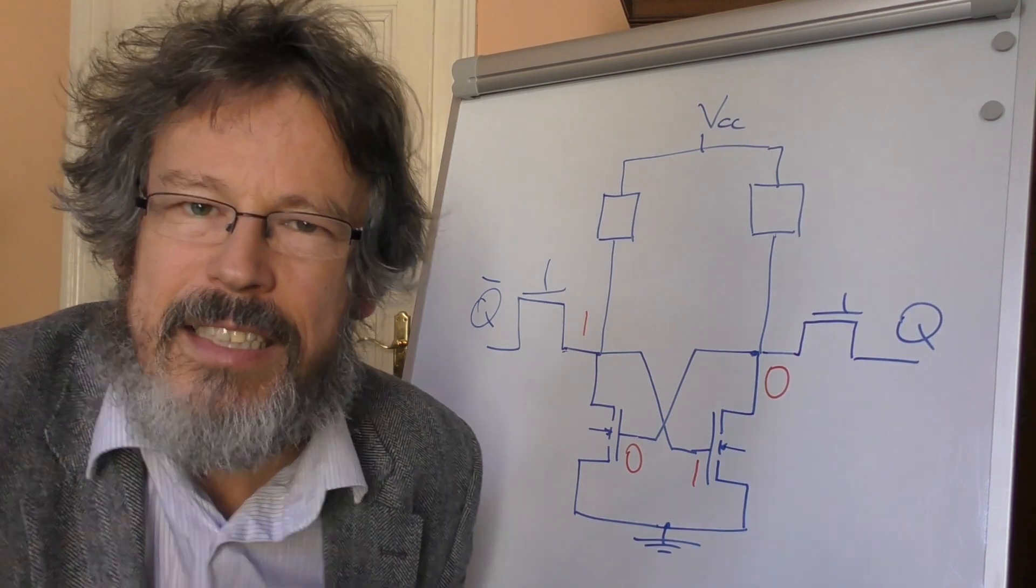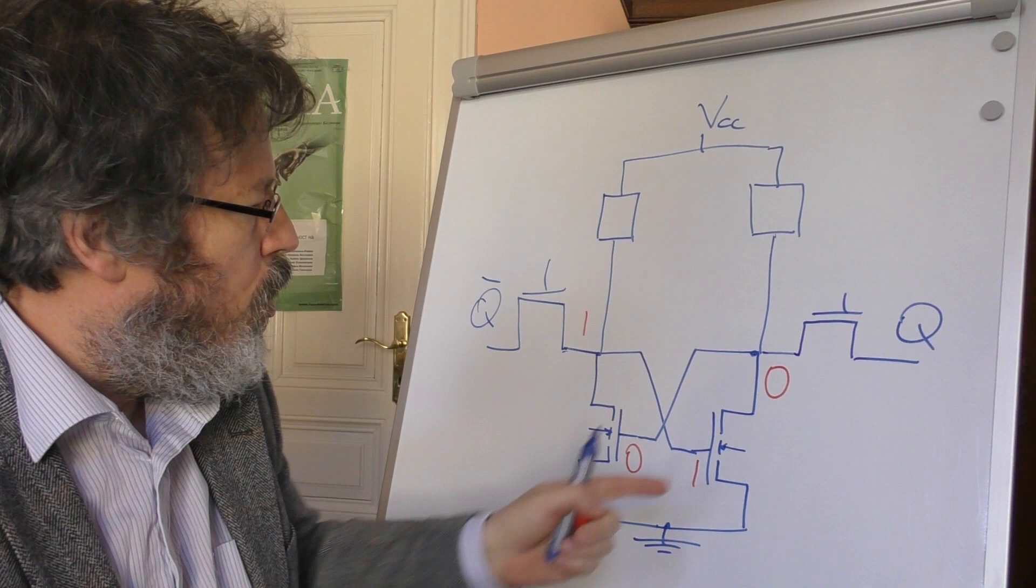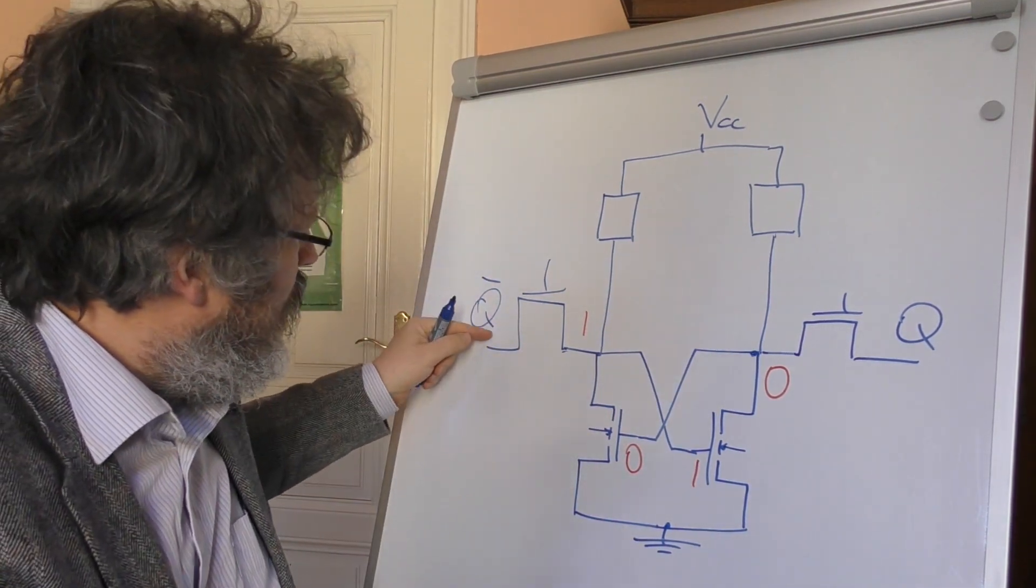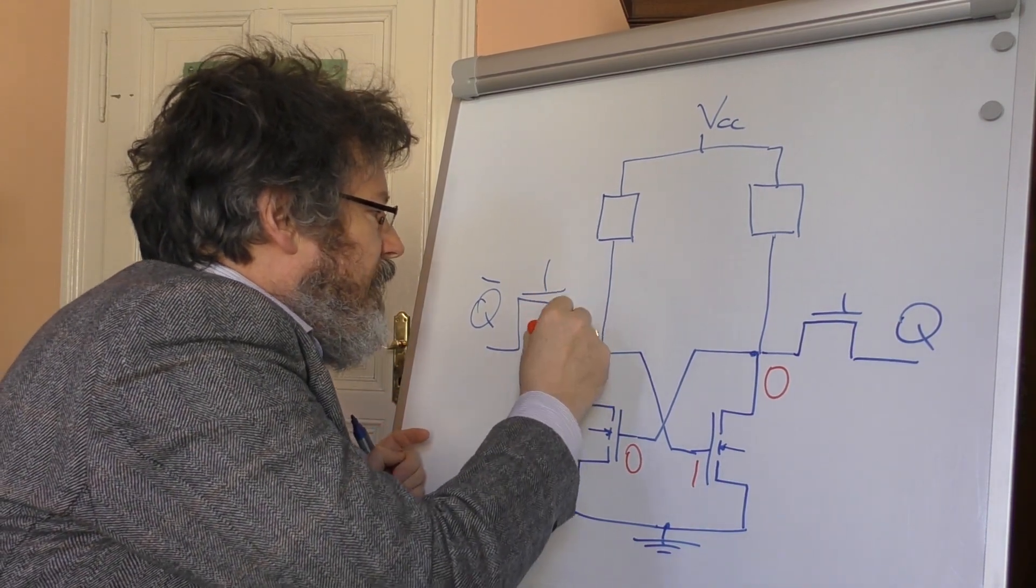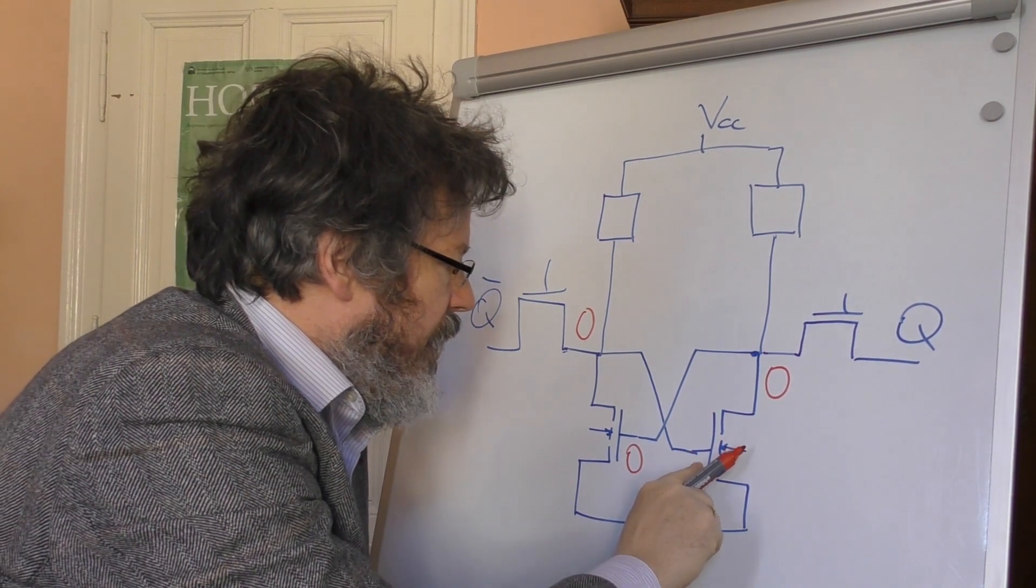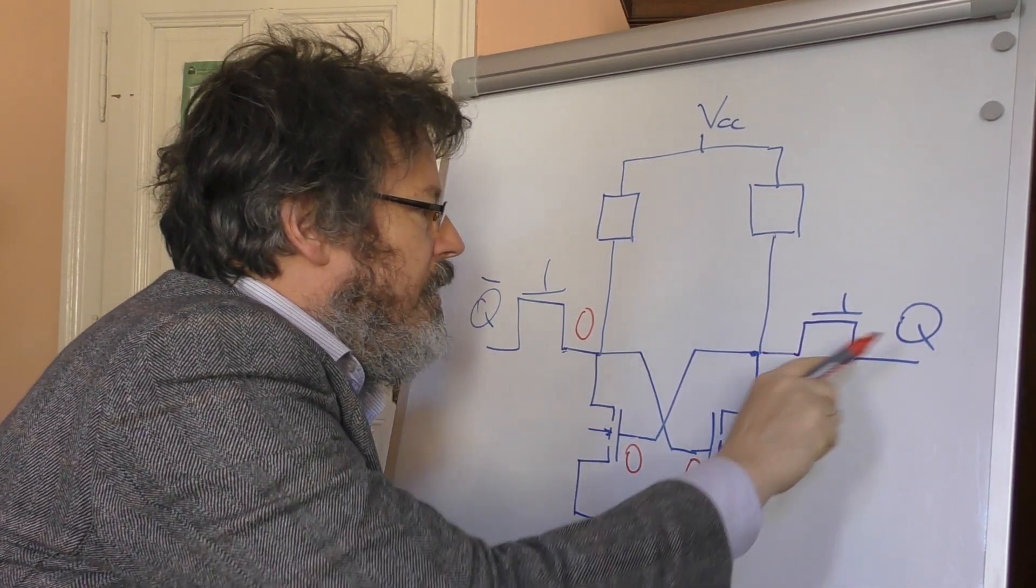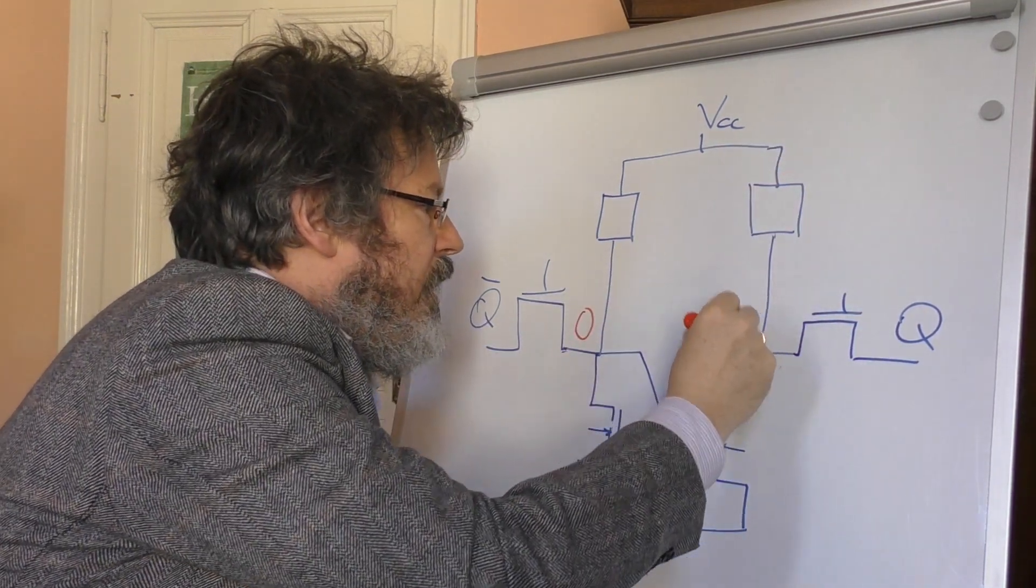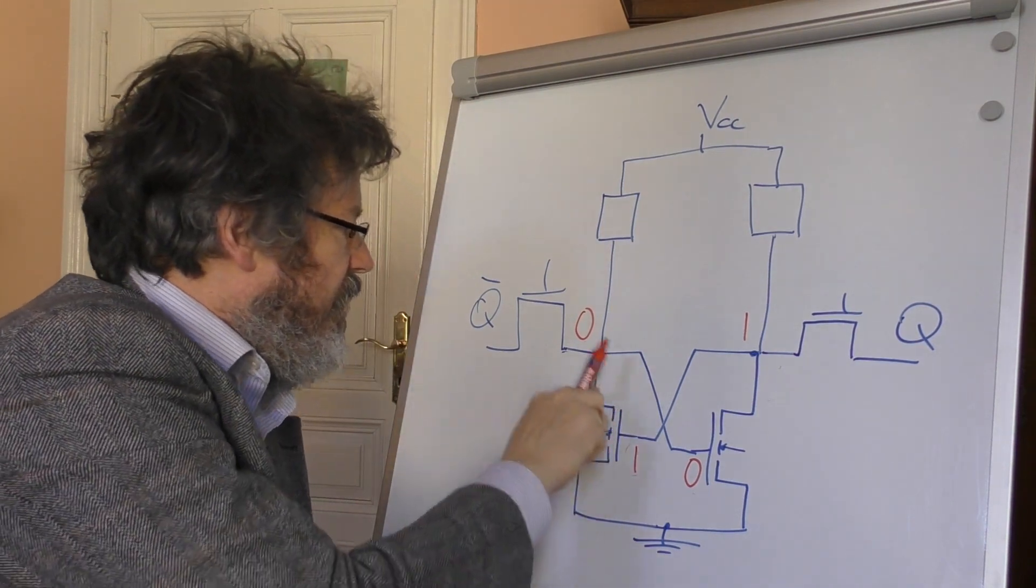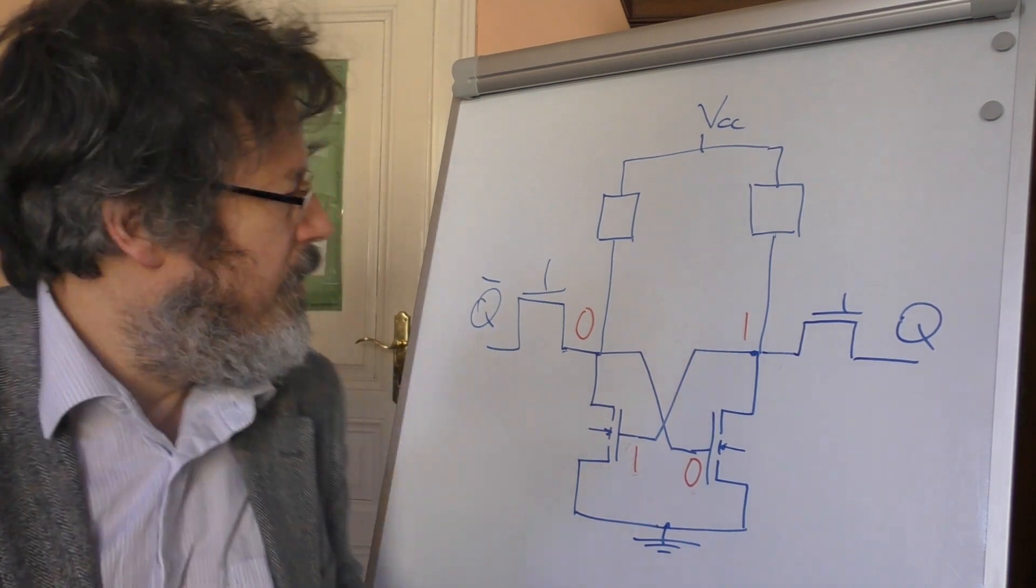So that there's no connection here, so this output is connected via this ohmic resistor to a high potential. And indeed, we have again the same effect that this feeds back to itself and is stable. And only when a low potential is forcibly brought into this input, can it flip.